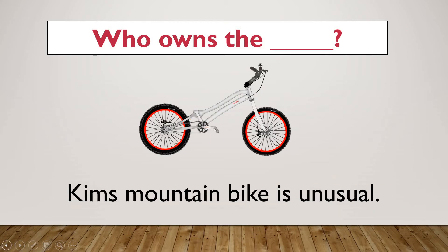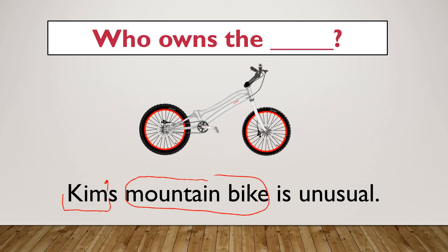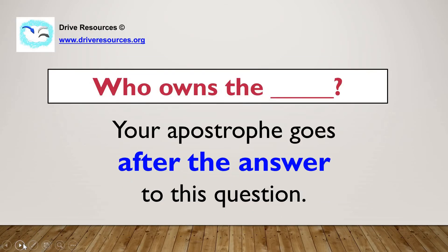Who owns the mountain bike? 'Kim's mountain bike is unusual.' Who owns the mountain bike? Kim owns the mountain bike, so my apostrophe goes after 'Kim.'